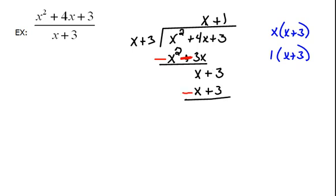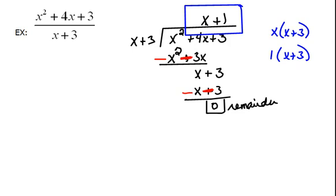Now instead of subtracting, we're going to change our signs and combine. So x minus x is nothing. Positive 3 and negative 3, those cancel out. So we have a zero remainder. Our answer then is right here. That's our quotient, or our answer. So the answer would be x plus 1.